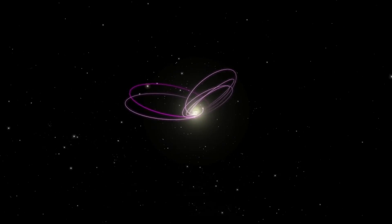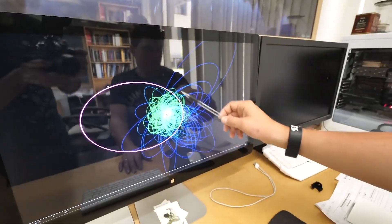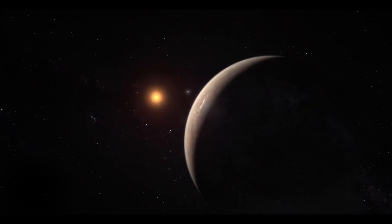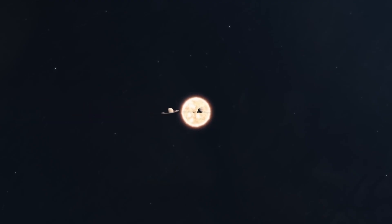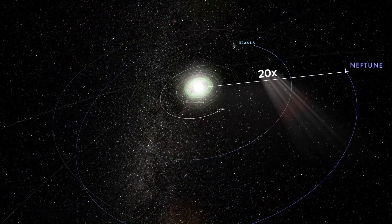When they ran their models, the strange movements of the TNOs could be explained using the gravitational pull of this possible ninth planet. But if this planet does exist, its orbit would be enormous and nearly 20 times further from the Sun than Neptune.